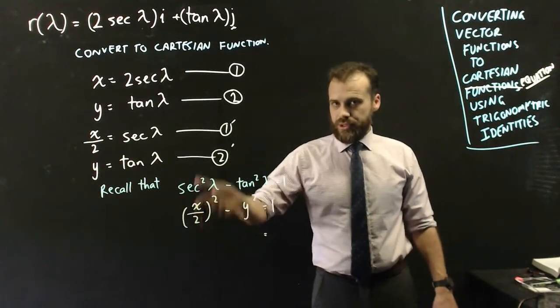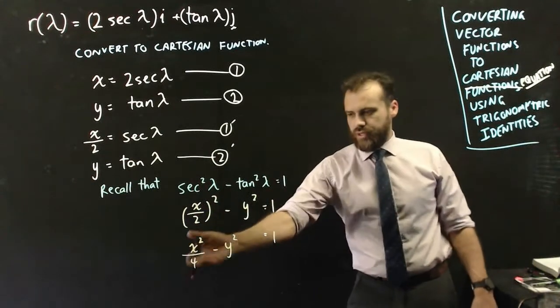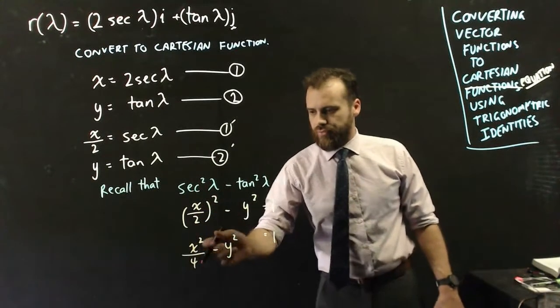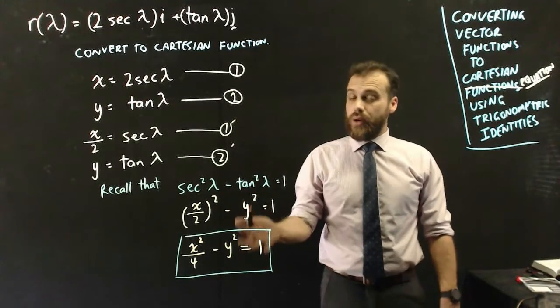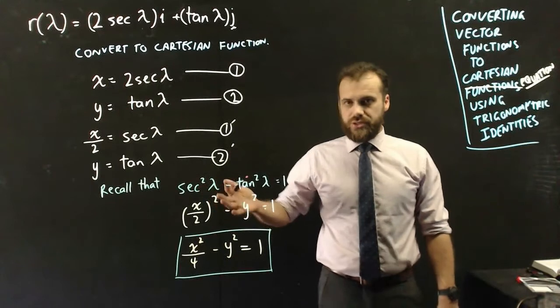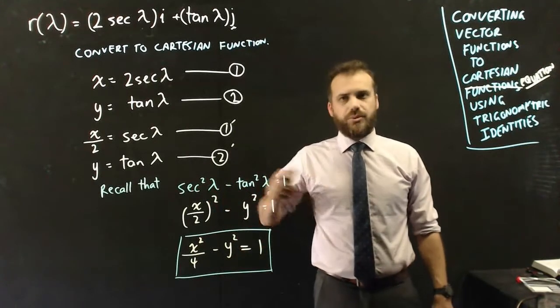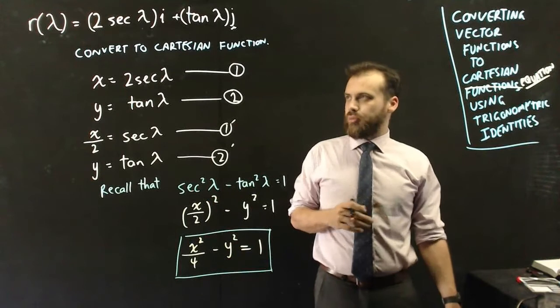I'll just tidy this one up a little bit by squaring top and bottom. And now I have a Cartesian equation. x squared on 4 minus y squared equals 1. Now that's our equation. Now you can type that into Geogebra or Desmos and take a look at what that one looks like. It's a pretty funky looking hyperbola,